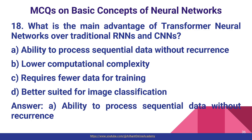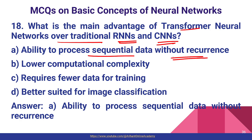Question number eighteen: what is the advantage of the transformer neural network over traditional RNN and CNN? The advantage is the ability to process sequential data without recurrence. This is the key advantage of the transformer, comparative to RNN and CNN. Option A.